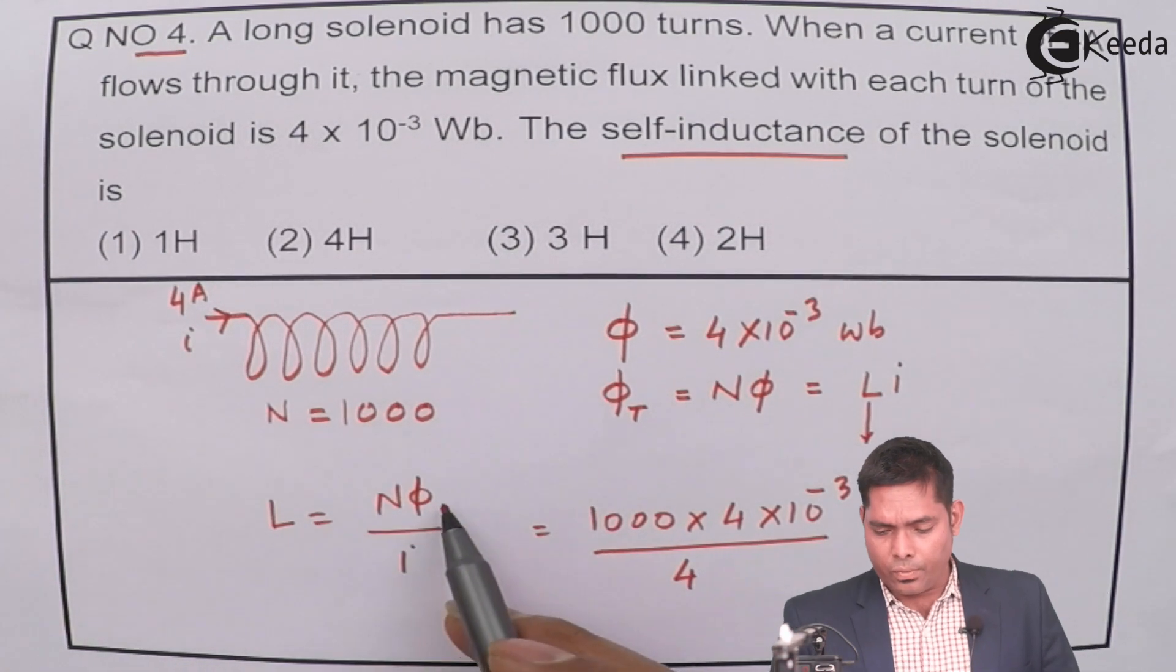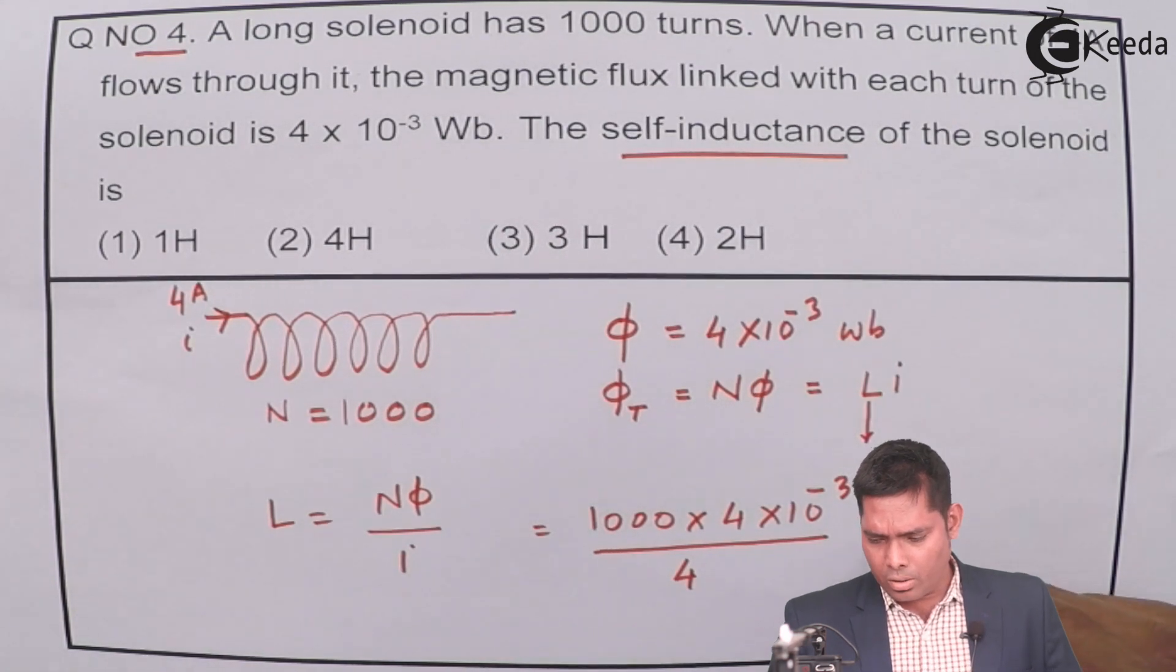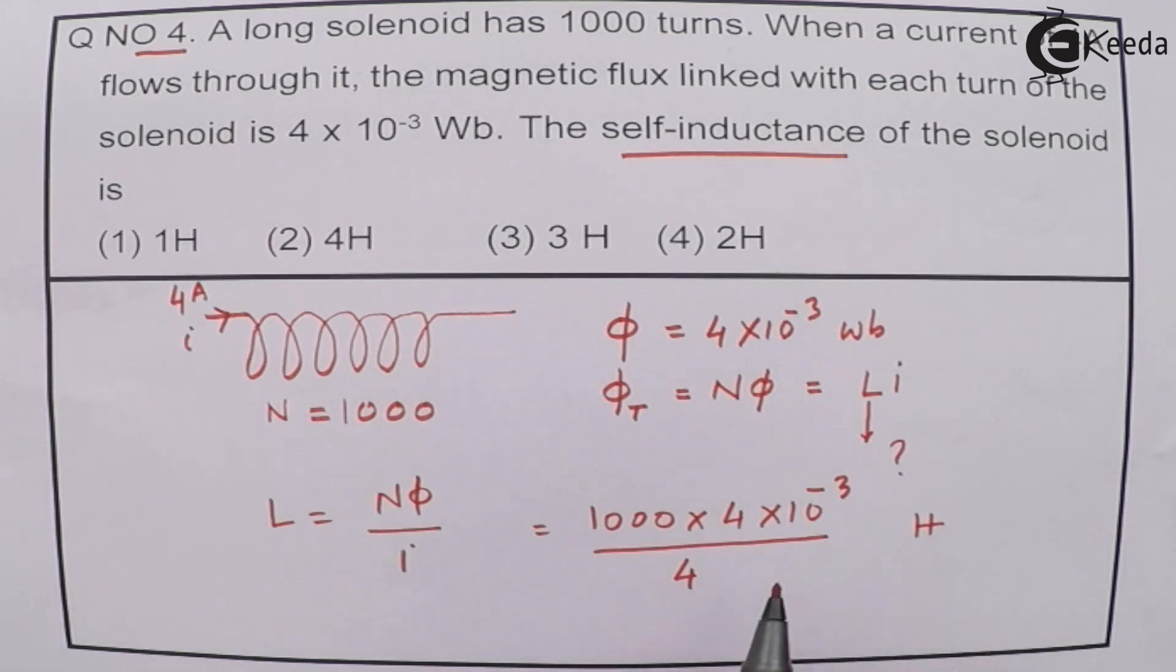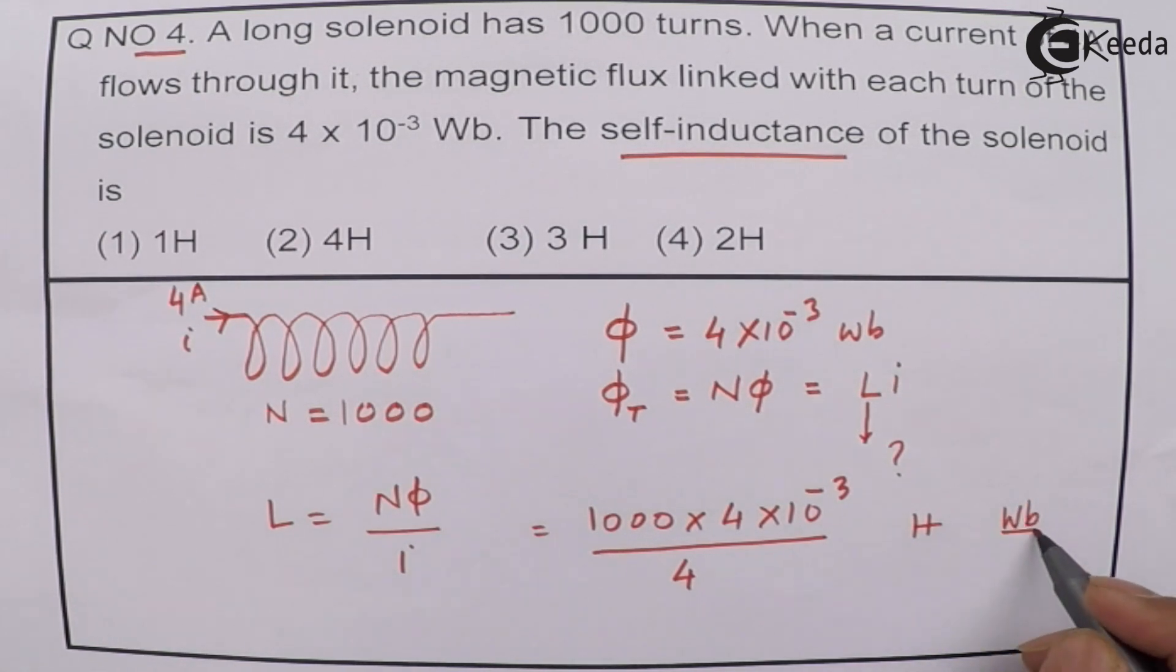Since the number of turns, this flux is Weber per ampere, that is Henry. All of them are in SI system, so the answer will be Henry or Weber per ampere.